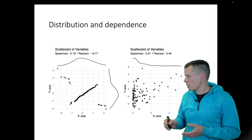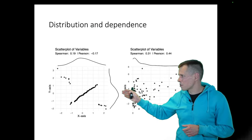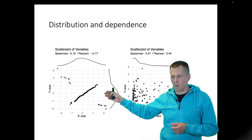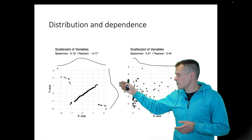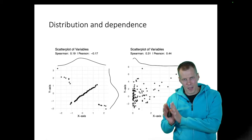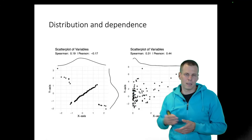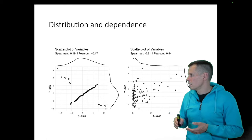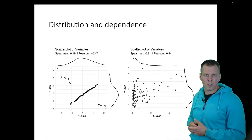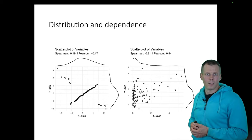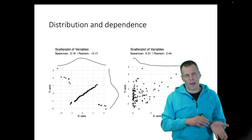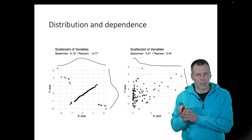To recap: it is entirely possible to have normally distributed variables where rank and linear correlation give very different results — even opposite signs — but this probably never happens in real data. When you have normally distributed variables, it's extremely unlikely that rank and linear correlation would go in different directions. And Spearman and Pearson correlation can be very similar even when data are non-normal. I generally go with linear correlation because it's more compatible with other analyses like regression applied in my study.